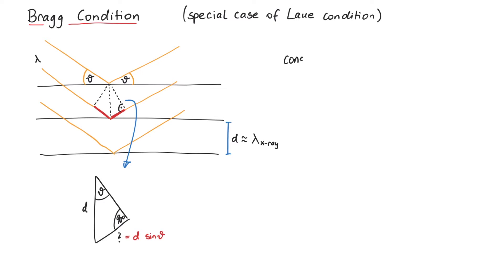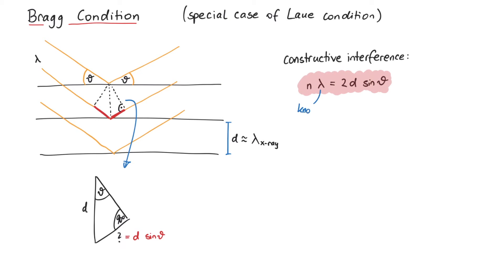Therefore, the condition for constructive interference for scattering on a lattice is n times lambda being equal to 2 times d times the sine of theta. Since we know the wavelength of the light that we are using, we can change the angle of incidence until we measure constructive interference. Then, by using lambda and theta, we get information about the lattice distance d.